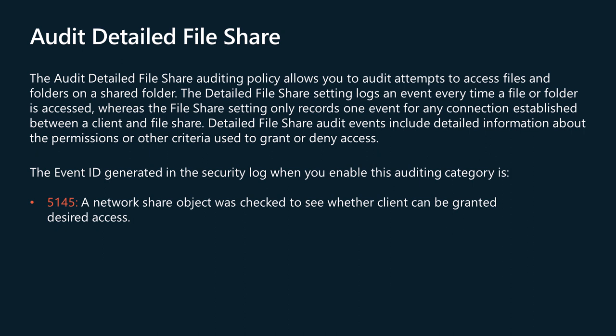The audit detailed file share auditing policy allows you to audit attempts to access files and folders on a shared folder. The detailed file share policy logs an event every time a file or folder is accessed, whereas the file share auditing policy only records one event for any connection established between a client and file share. Detailed file share audit events include detailed information about the permissions or other criteria used to grant or deny access. There are no SACLs on shared folders. If this policy setting is enabled, access to all shared files and folders on the system is audited. Items written to the security event log when this policy is enabled are listed in the documentation and on the screen.